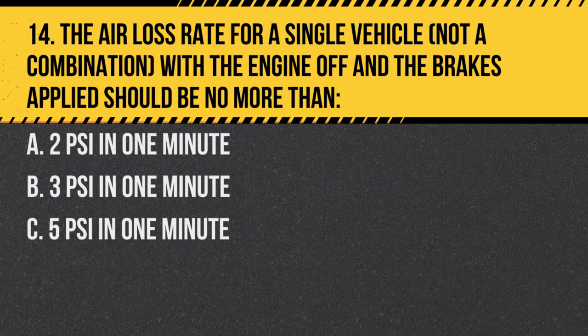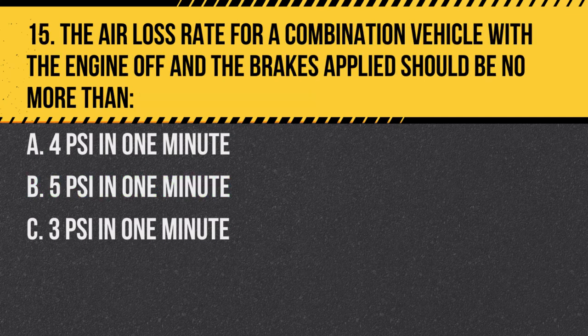Question 14. The air loss rate for a single vehicle (not a combination), with the engine off and the brakes applied, should be no more than: A. 3 psi in one minute. B. Three psi in one minute. C. Five psi in one minute. Answer B. Three psi in one minute. This ensures the system is sufficiently air-tight.